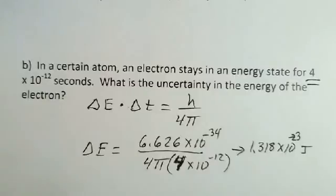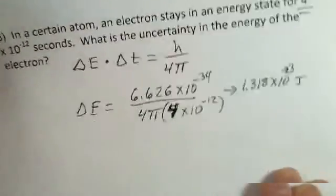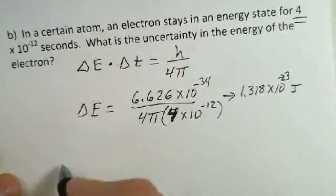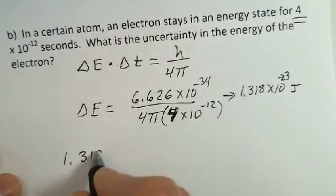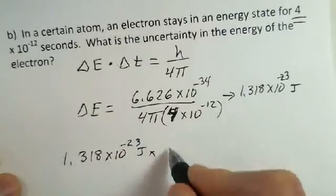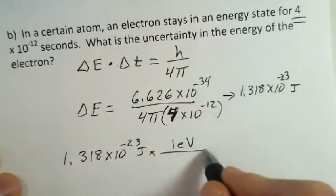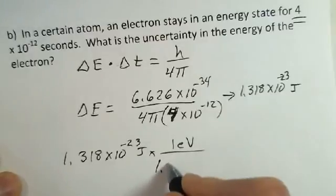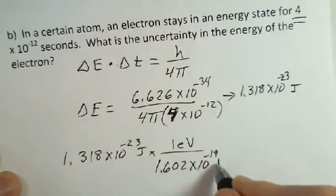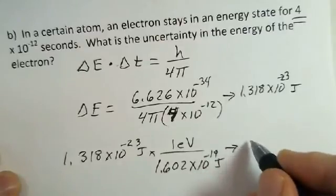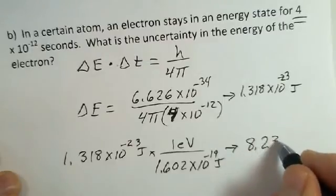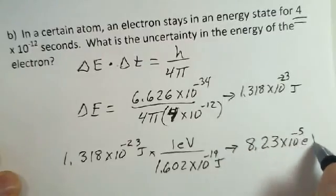And as we talk about atoms and so forth, the electron volts is a little easier energy unit to work with. So I'm going to convert this into electron volts. And to do that, our conversion factor between joules and electron volts is 1.602 times 10 to the minus 19. So it makes a little smaller number to worry about powers of 10. 8.23 times 10 to the minus 5 electron volts.